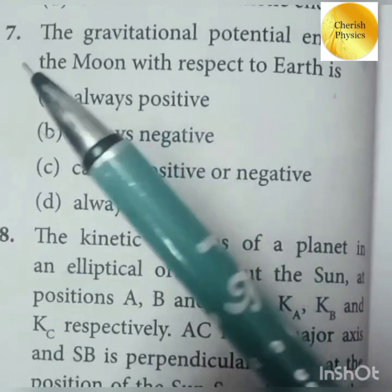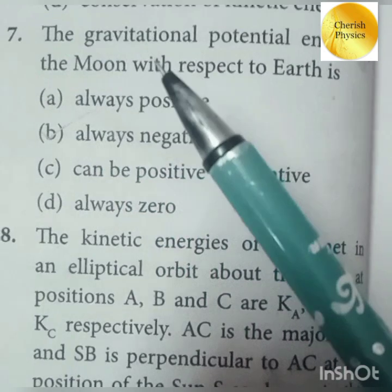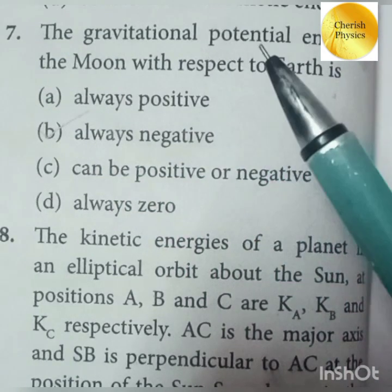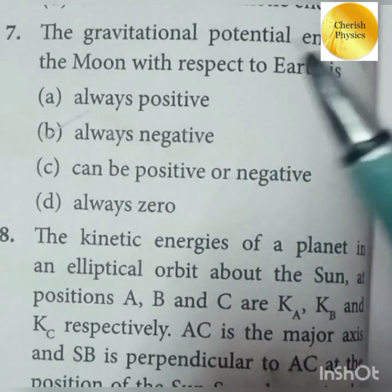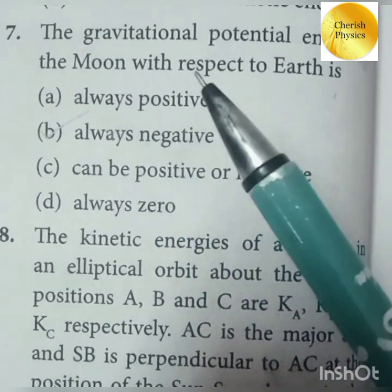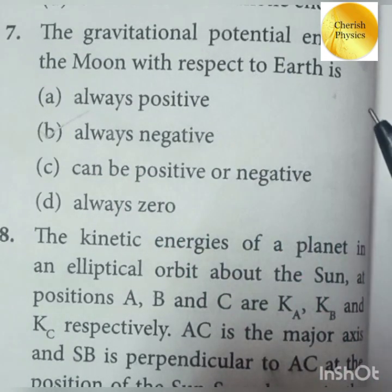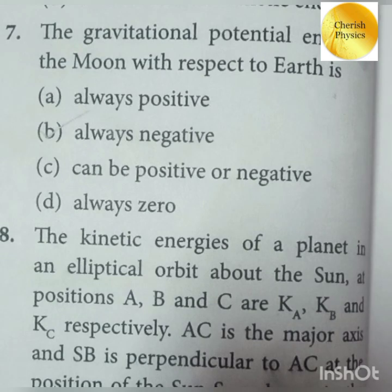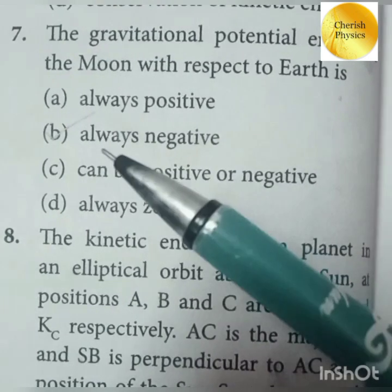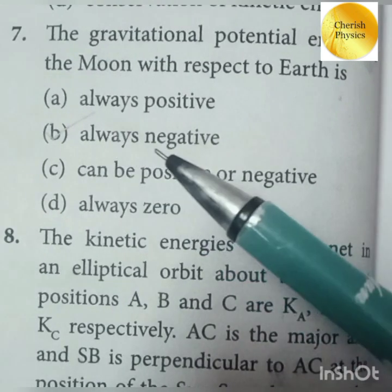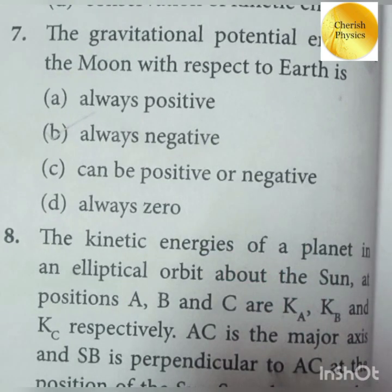Question number 7: The gravitational potential energy of the moon with respect to earth is always negative, because the work is done by the system.